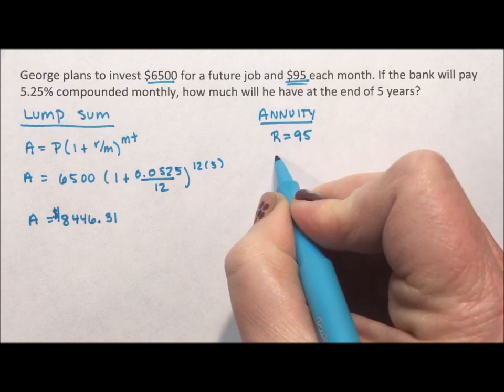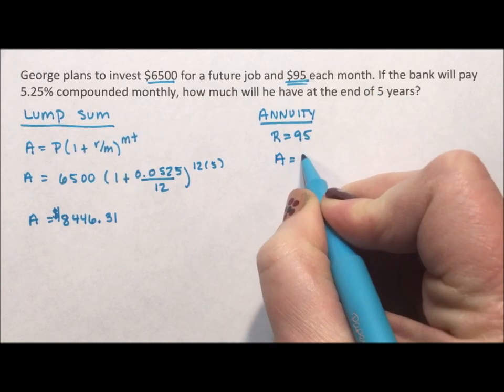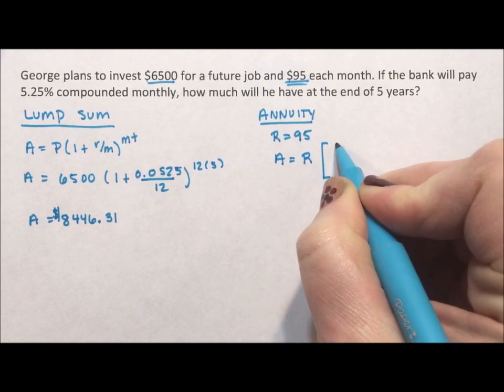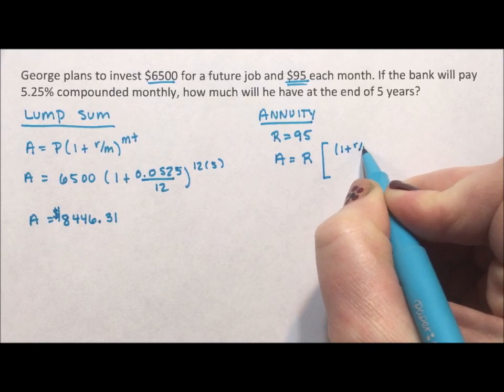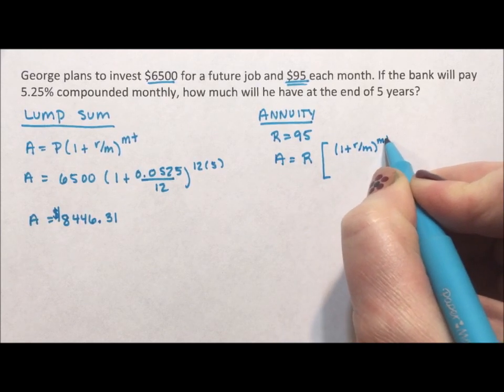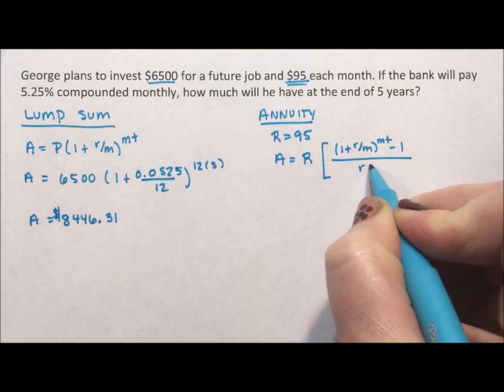So for an annuity, we have A equals R, 1 plus r over m to the mt minus 1 divided by r over m.